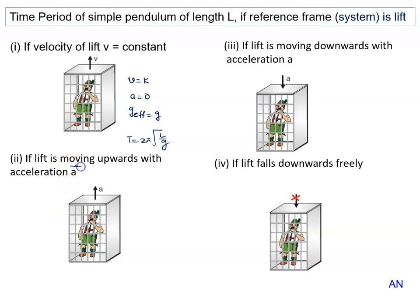If lift is moving upward with acceleration a, effective gravity downward side due to pseudo force will be given by g plus a. Time period in this situation is given by T equals 2π root L upon g plus a. If lift is moving downward with acceleration a...